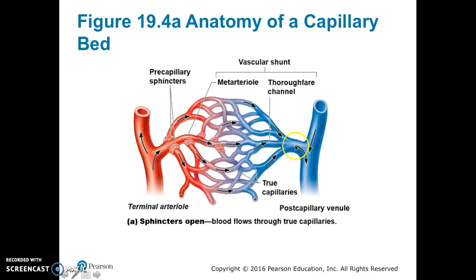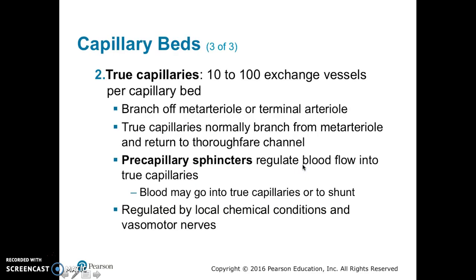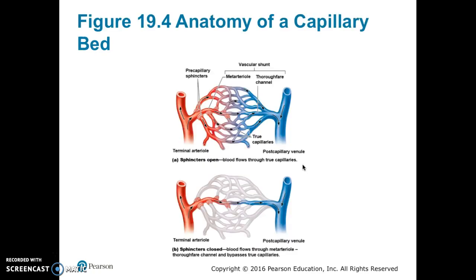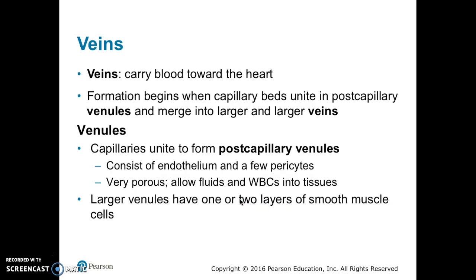All of the blood ends up going to the post-capillary venule. True capillaries are the exchange vessels, and there are about 10 to 100 capillaries in a capillary bed. True capillaries branch off the meta-arteriole or the terminal arteriole, and the pre-capillary sphincters regulate blood flow through them. When the pre-capillary sphincters are open, blood flows through all of the true capillaries; when they are closed, blood flows only through the vascular shunt.